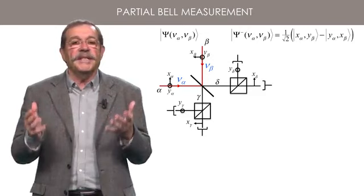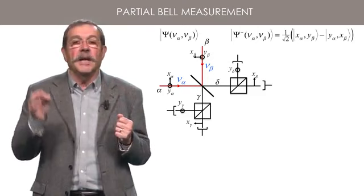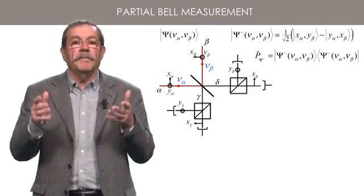Moreover, when that signal is emitted, the initial state is projected onto the eigenspace associated with psi-minus. The corresponding projector is P psi-minus.